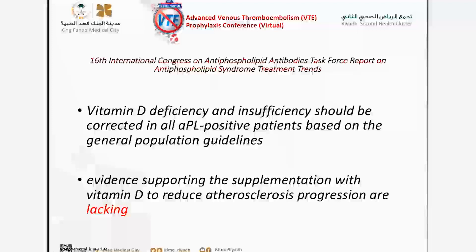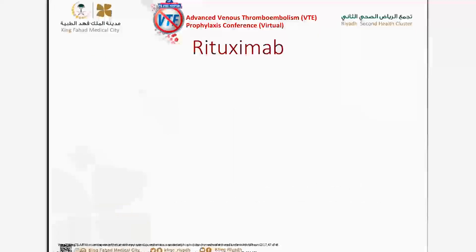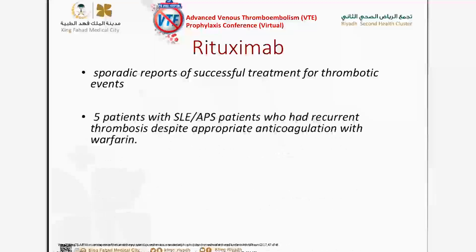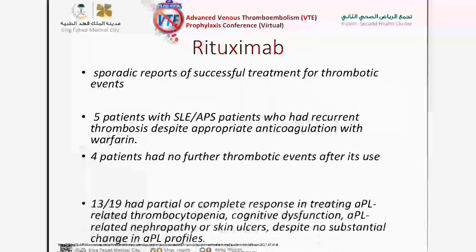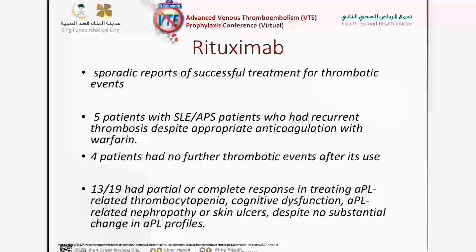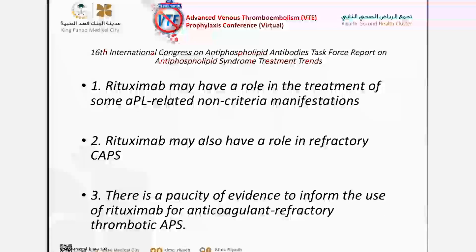Vitamin D — although we know deficiency plays a role in triggering thrombosis, there is no enough evidence to support supplementation to reduce atherosclerosis and thrombosis. Rituximab: there are sporadic reports about successful use of rituximab for thrombotic events in SLE and antiphospholipid patients with recurrent thrombosis, and reports about using it in non-criteria APS manifestations that usually do not respond to anticoagulation. Rituximab might have a role in APS-related non-criteria manifestations, refractory CAPS, and refractory thrombosis in SLE patients.